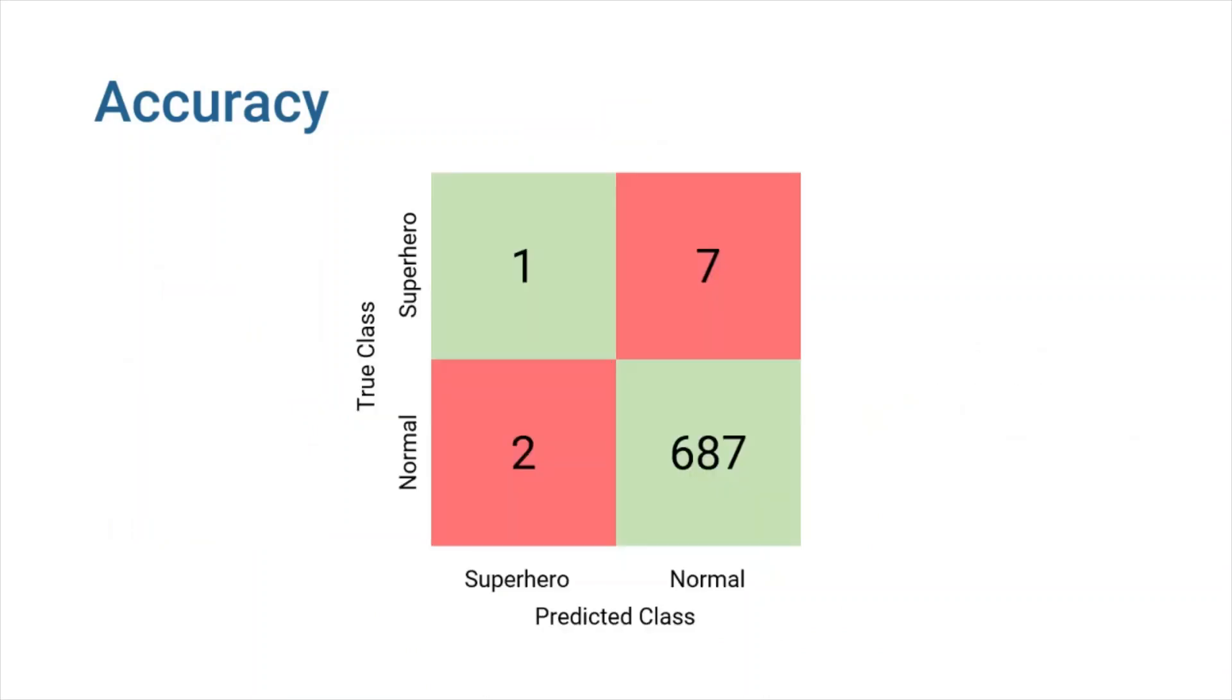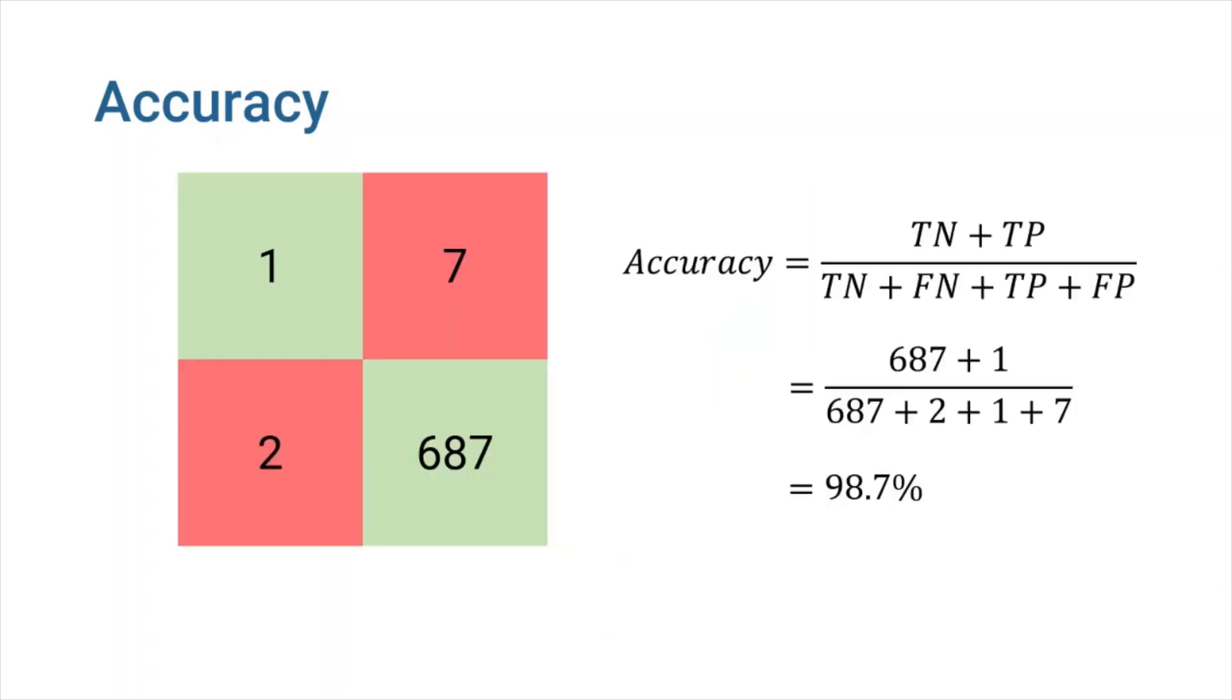At the end of the day, the confusion matrix will look like this. Note that only three samples are classified as superheroes. Accuracy of this model is 98.7%. Isn't it great? We can sell this dumb classifier to the government and receive billions of dollars.